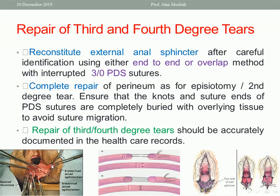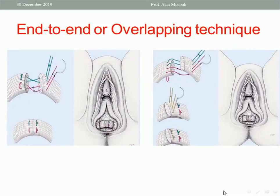The pictures show the external anal sphincter, internal anal sphincter, and rectal mucosa in a complete perineal tear. End-to-end and overlapping repair techniques are illustrated: this is the end-to-end technique, and this is the overlapping technique.